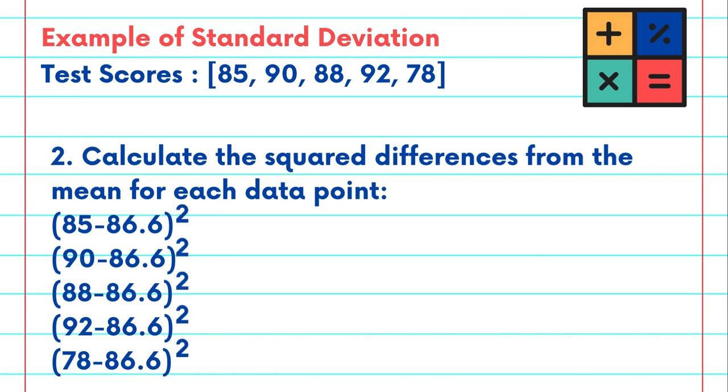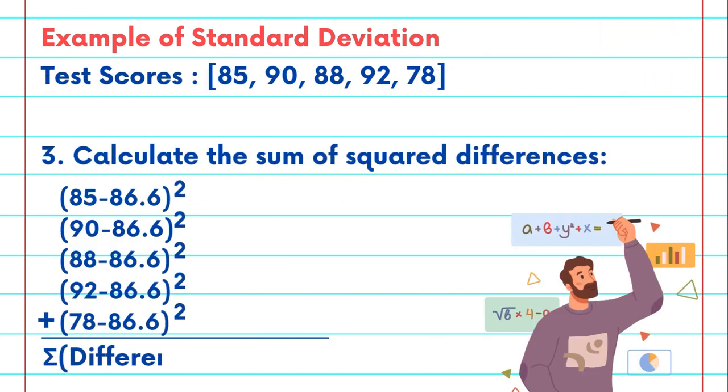Then we will square each of the differences we just solved for. Now we need to calculate the sum of these squared differences. So let's add up all of the numbers that we just calculated. The sum of our squared differences is equal to 101.2.